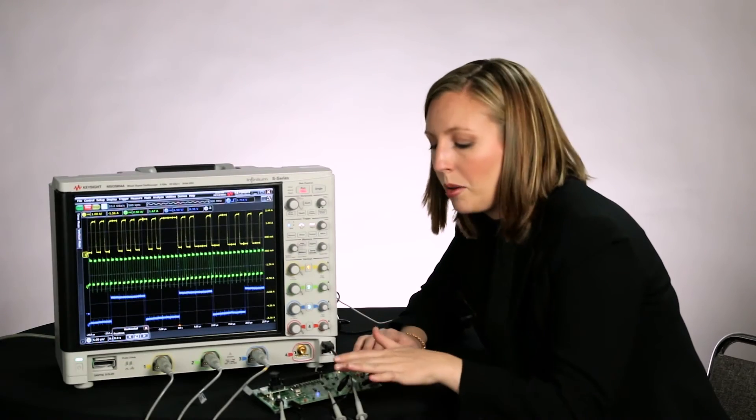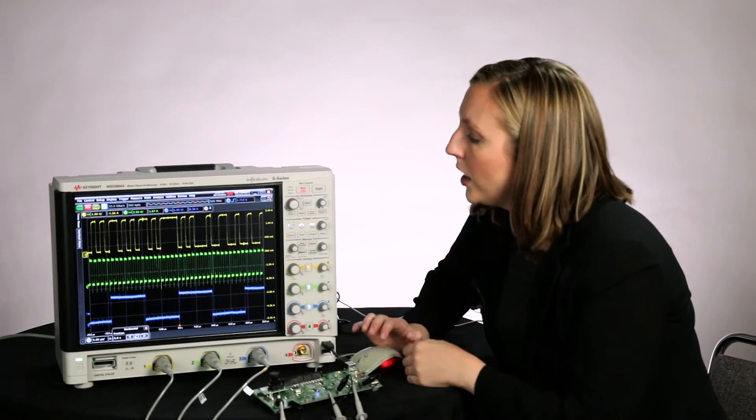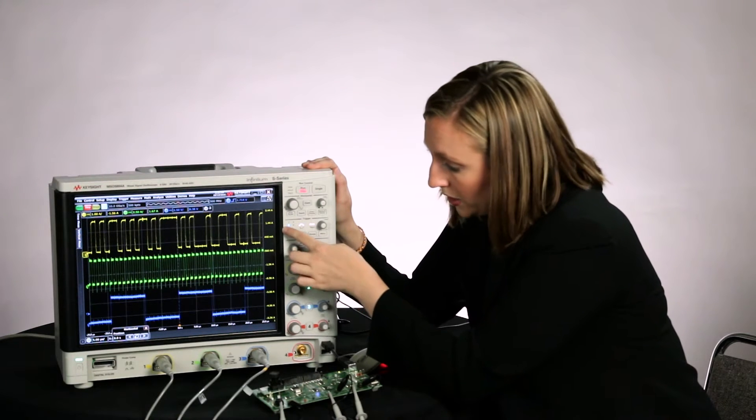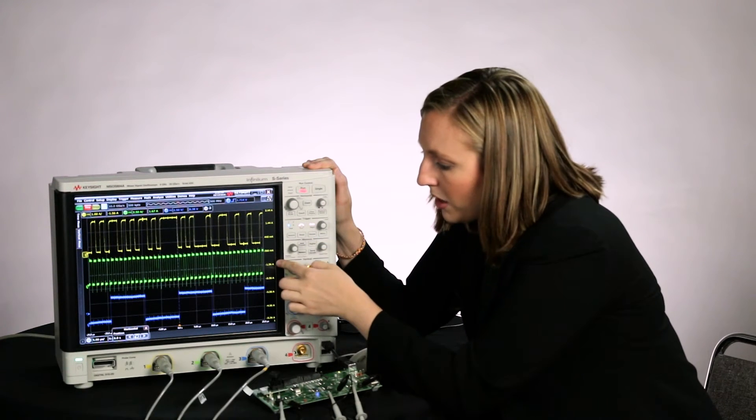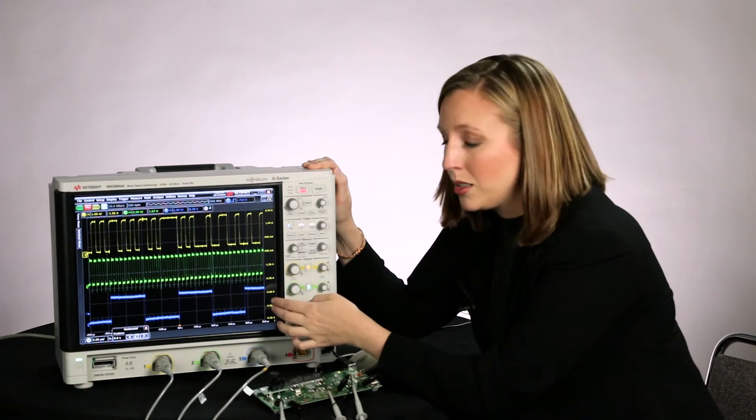So here I have my board and I'm probing my I Squared S bus. Here you can see on channel 1 this is my data source, channel 2 I've got my clock source, and on channel 3 is my word select.